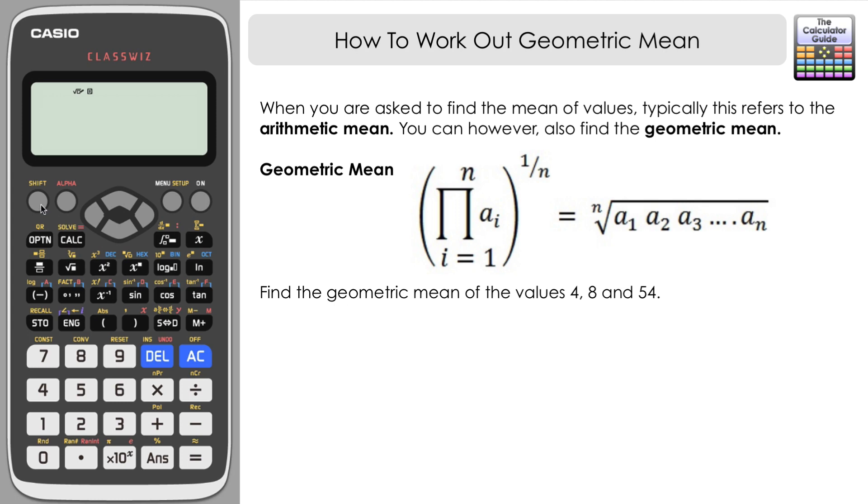So we're going to start off with the root where we've got three values. So it's the cube root of, and then we need to multiply the values together. So 4 times 8 times 54. Press equals and here's the geometric mean: 12. So the geometric mean of those three values is 12.